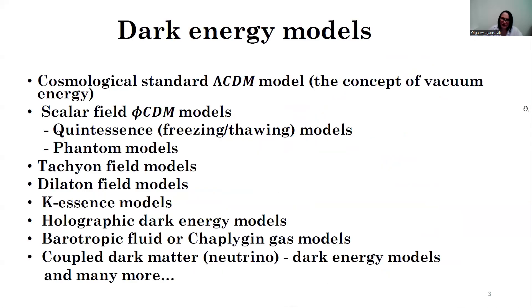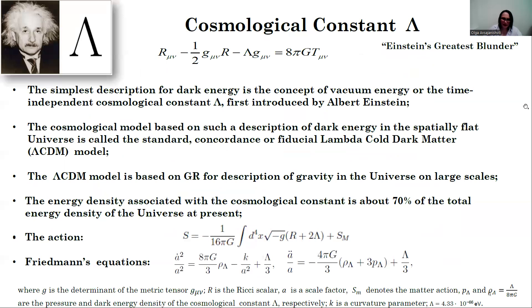There are numerous dark energy models, a partial list of which is presented here. The simplest description for dark energy is the concept of vacuum energy or the time-independent cosmological constant Λ, first introduced by Albert Einstein. The cosmological model based on such a description of dark energy in the spatially flat universe is called the standard concordance or fiducial ΛCDM model.